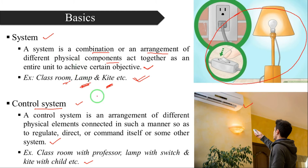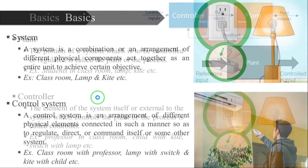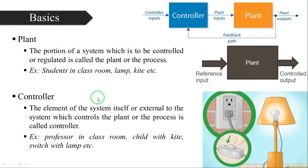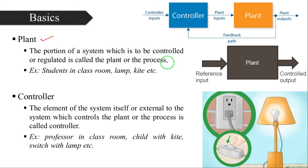Now we will move to another basic concept — the plant. What do you mean by a plant? The portion of a system which is to be controlled or regulated is called the plant or process. So we are controlling a system, and that system consists of some portions.